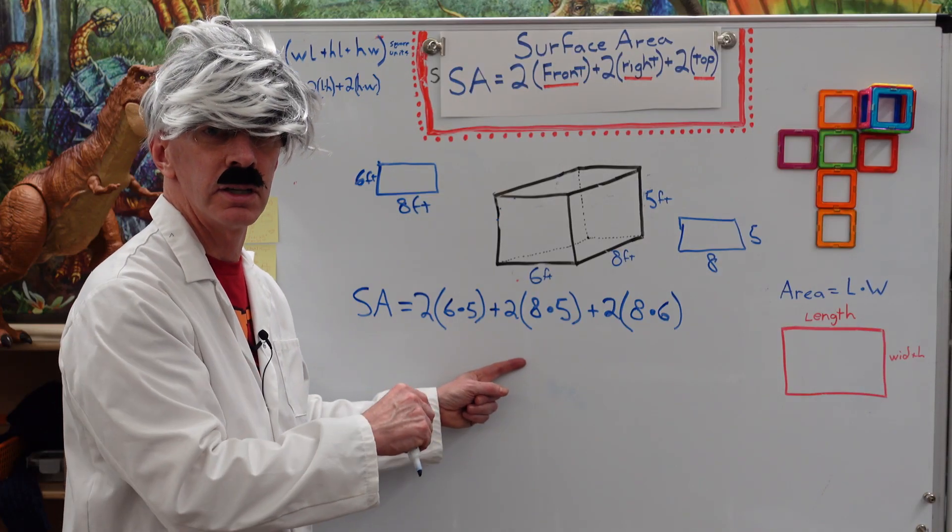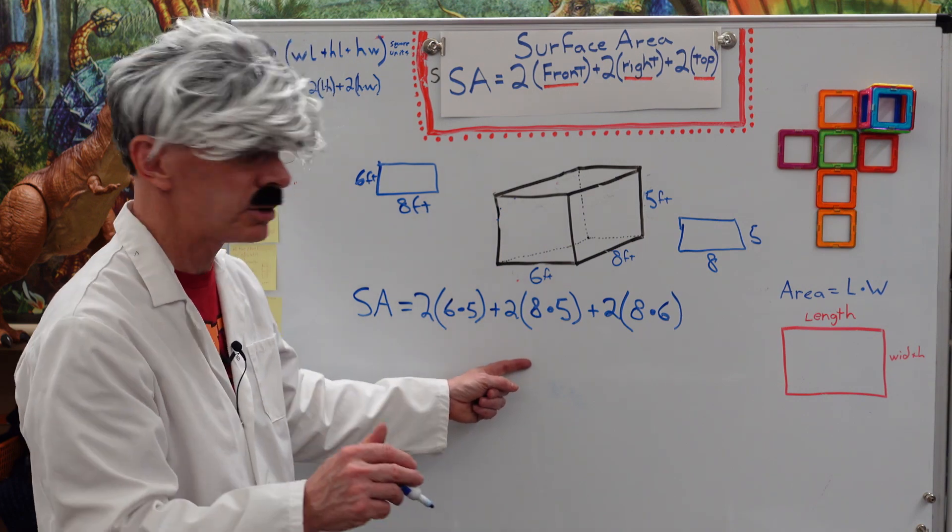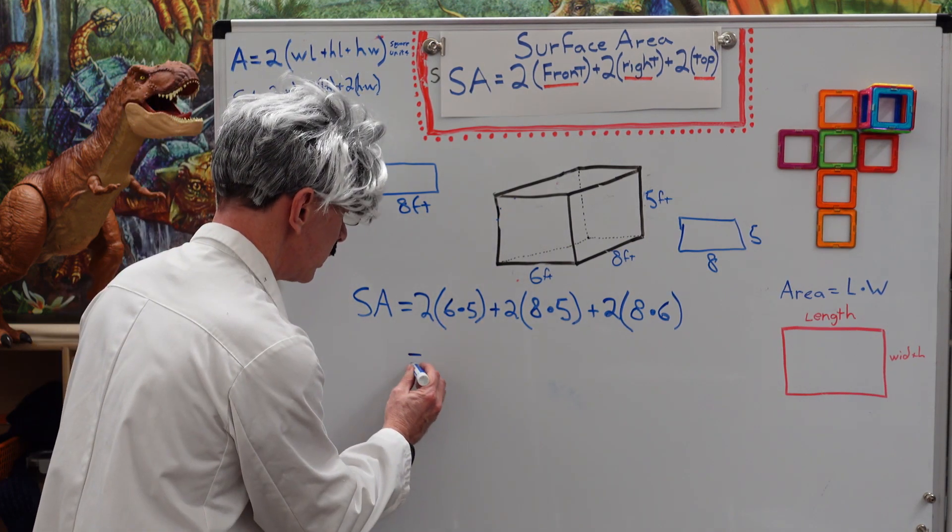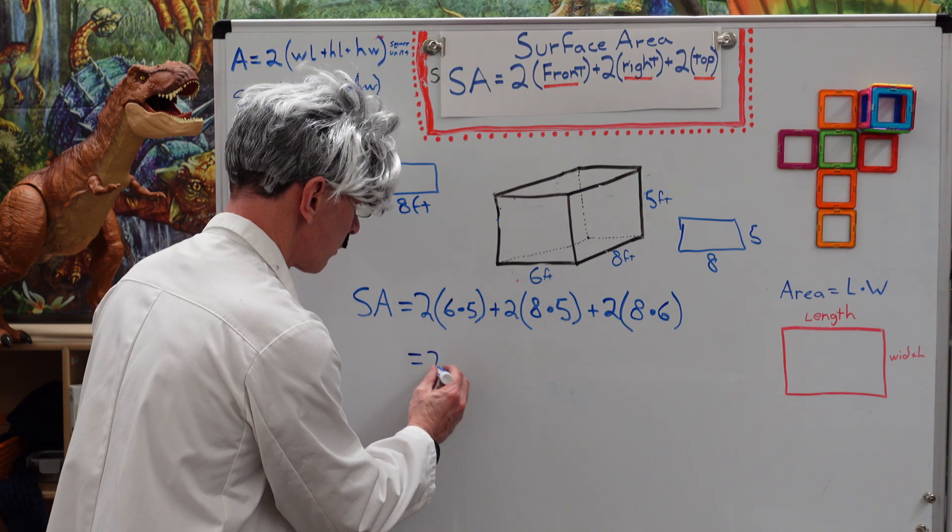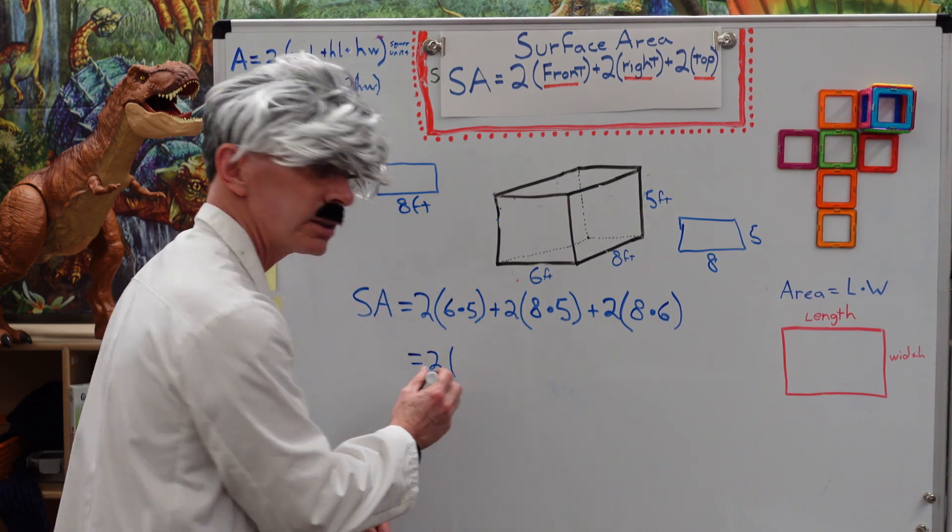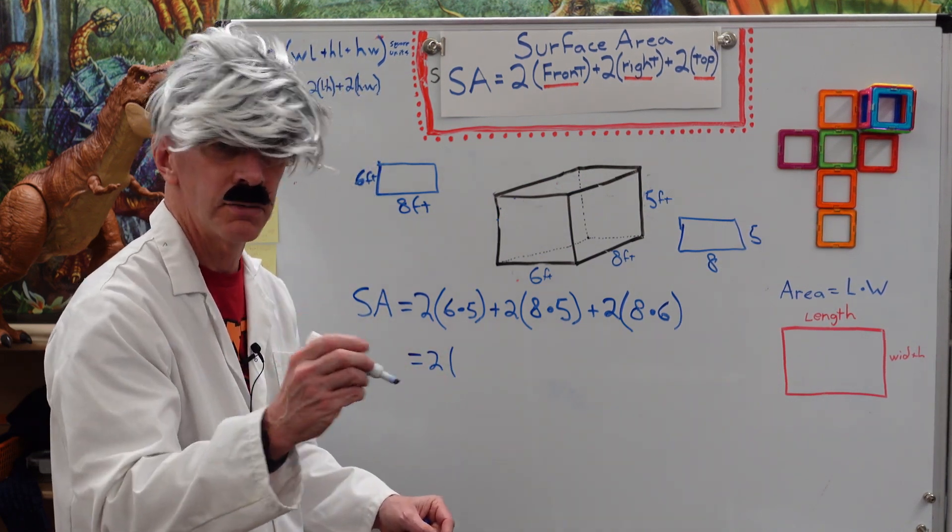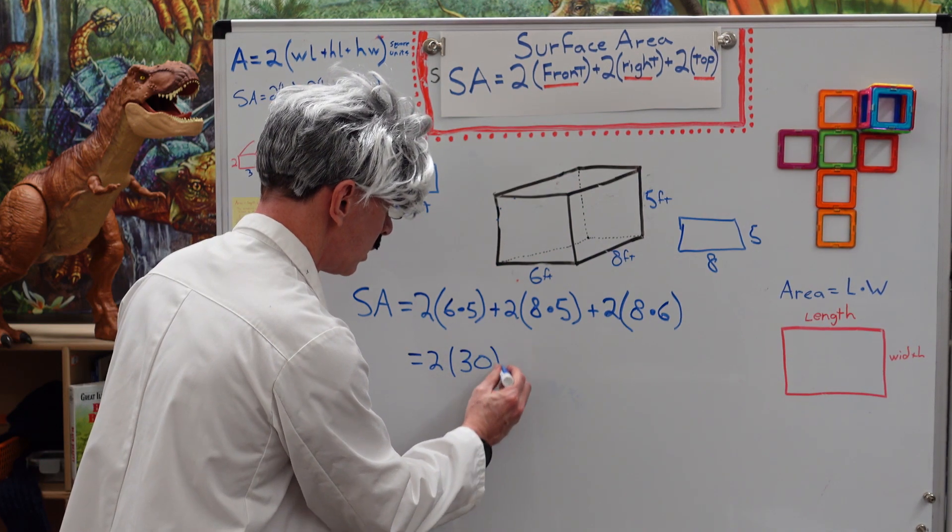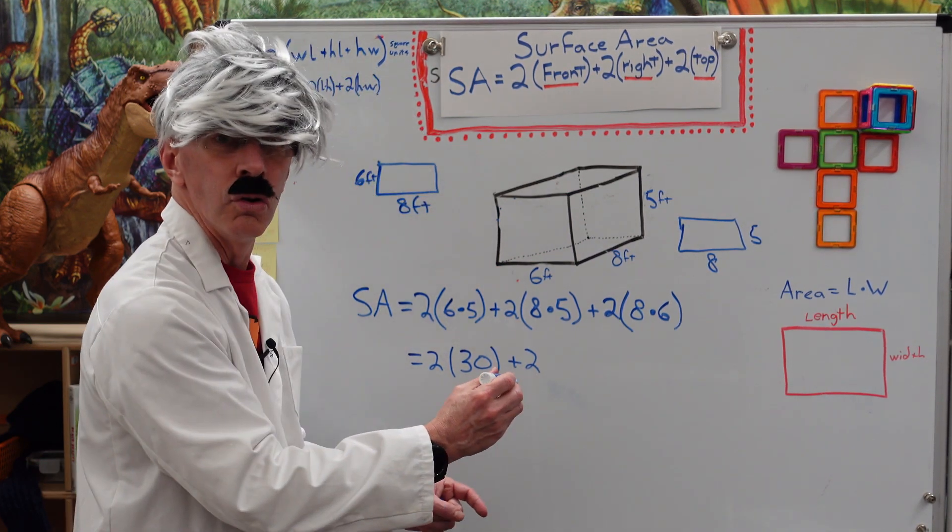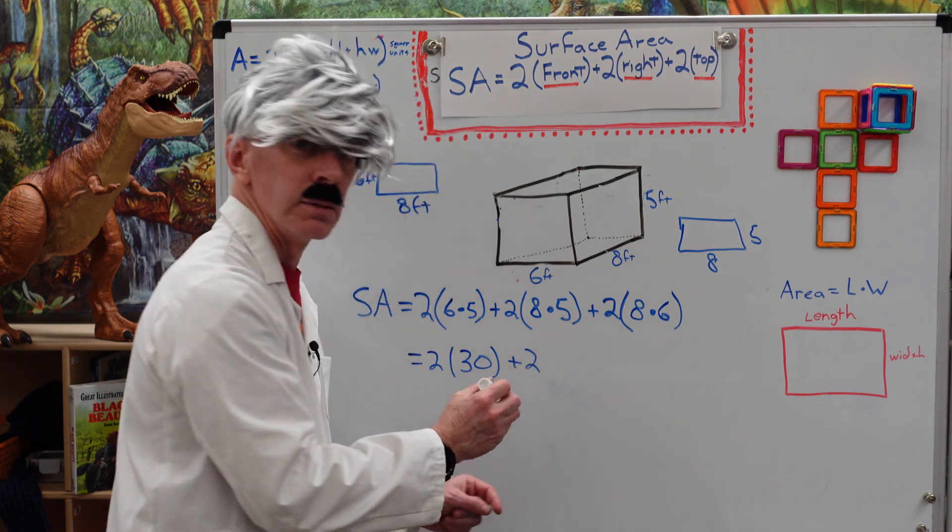On to the next part. This part is also easy, cheesy, lemon squeezy. So, we go ahead and multiply. 2 times 6 times 5. Do you know 6 times 5? 30. Very good. Plus, 2.